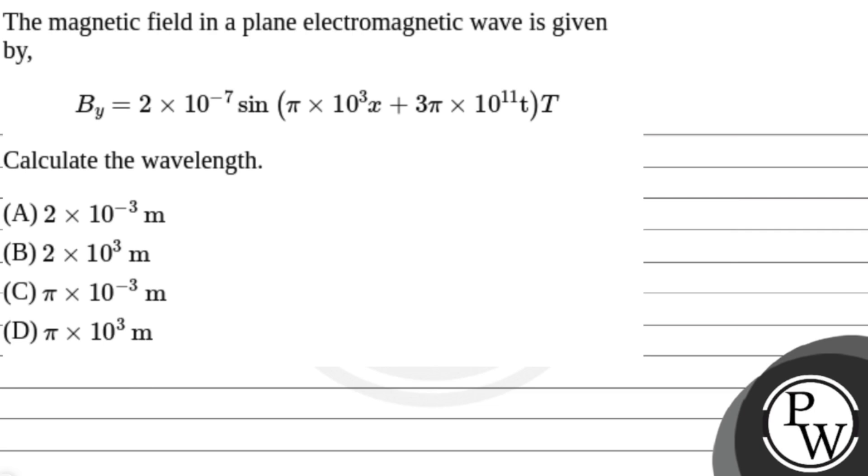Let's see the key concept involved here. The key concept is B equals B0 sin omega t plus kx. This is the equation of magnetic field as an electromagnetic wave.